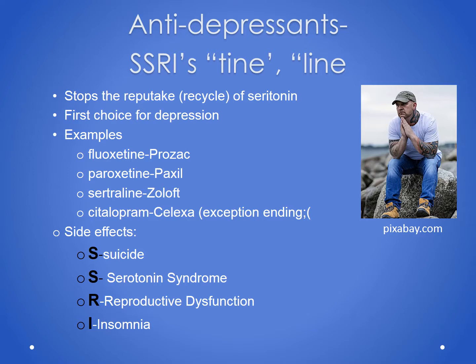Side effects of SSRIs can be remembered with the acronym SSRI. First is suicide — we must watch for suicide, as these medications can actually potentiate suicidal ideation when first started, and they take about four weeks to reach a steady state. Next is serotonin syndrome, which is essentially an overdose of serotonin; signs include agitation, hallucinations, possible coma, tachycardia, and extreme hyperthermia. The third side effect is reproductive dysfunction — up to about 60% of patients experience a dramatic decrease in libido. Lastly is insomnia, as these medications can cause trouble sleeping.